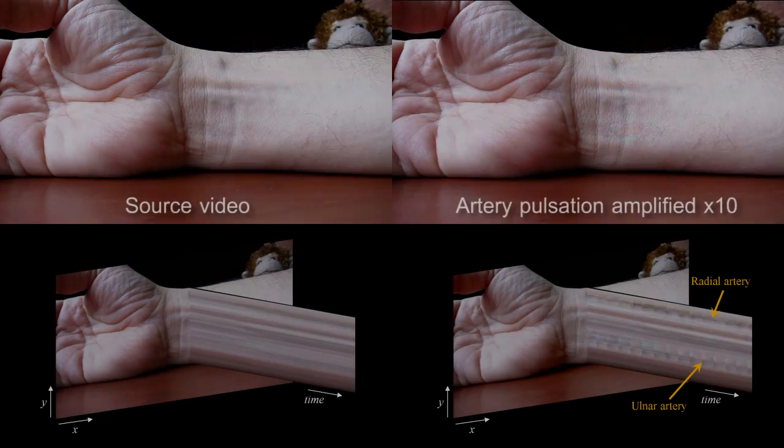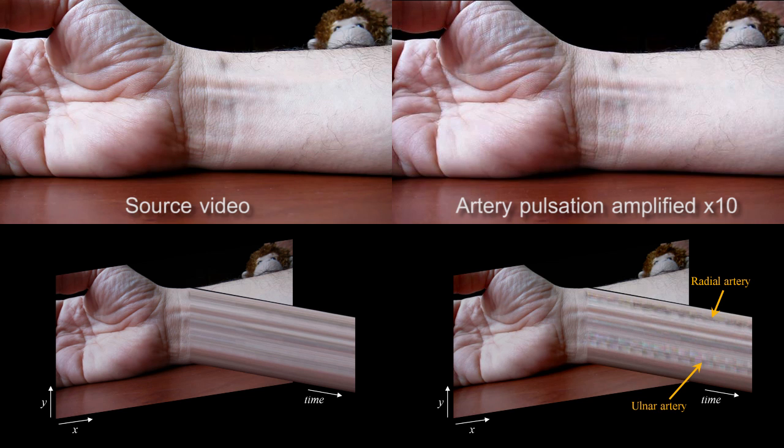The same algorithm can also reveal imperceptible motions, like the pulsing motions of arteries in the wrist.